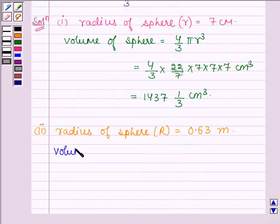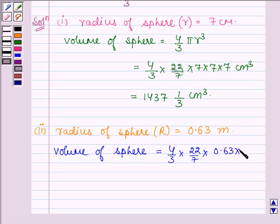And thus, volume of a sphere is equal to 4 upon 3 into 22 upon 7 into 0.63 into 0.63 into 0.63 m cube. This is equal to 1.05 m cube approximately.